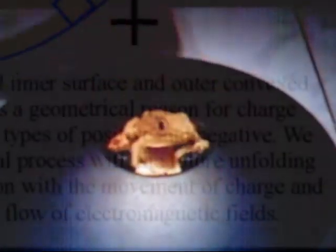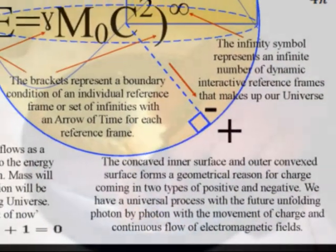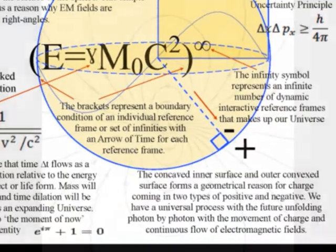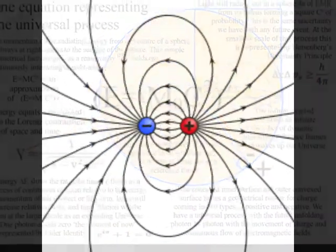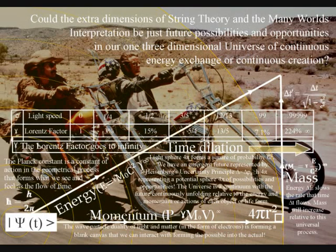We have the holographic principle with the information of a three-dimensional process unfolding in the form of a two-dimensional inner-concaved and outer-convex surface of the sphere, with the movement of positive and negative charge. By using the holographic principle in this way, the extra dimensions of string theory can be explained as just future possibilities and opportunities in our one three-dimensional universe of continuous energy exchange, continuous creation.